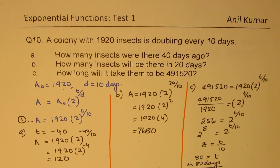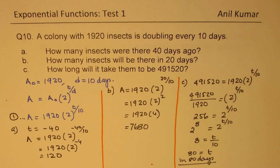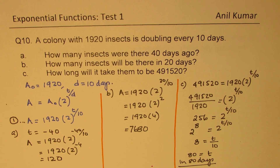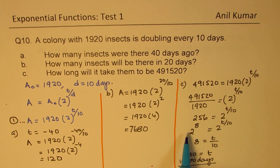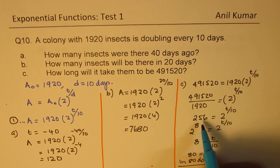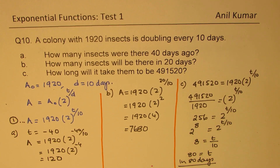In 80 days, they will be 491,520. Since this was a good number to work with, we could find the solution directly. Otherwise, we may use logarithms to find this solution — that is important to understand.